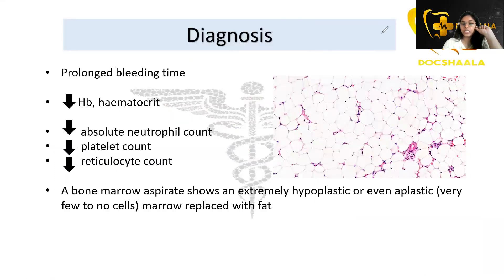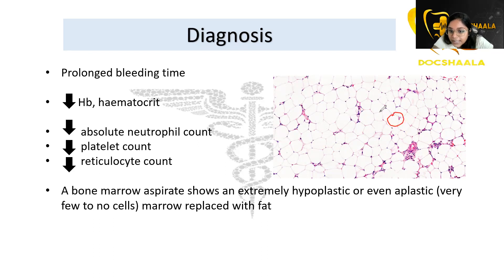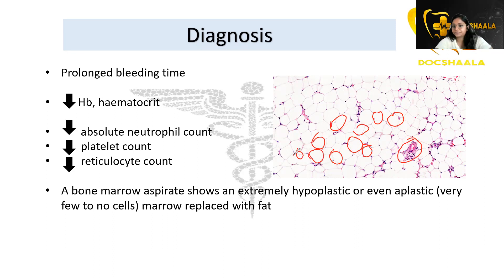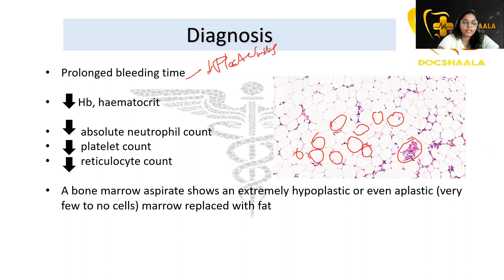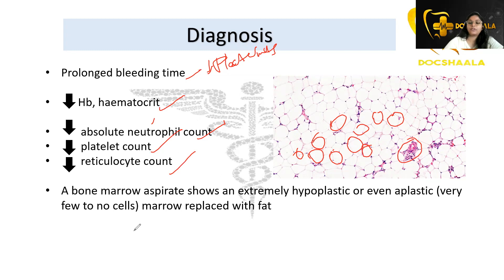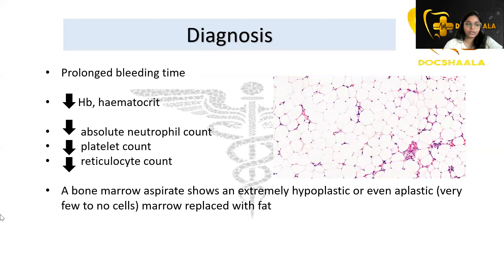For diagnosis, the bone marrow smear consists of fatty cells — the normal cells are decreased in number while fat is deposited throughout. There is prolonged bleeding time due to decreased platelets, decreased hemoglobin and hematocrit, decreased absolute neutrophil count, decreased platelet count, and decreased reticulocyte count. The bone marrow aspirate shows an extremely hypoplastic or aplastic picture with fewer cells, and marrow is replaced with fat.